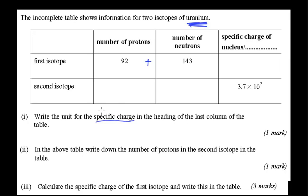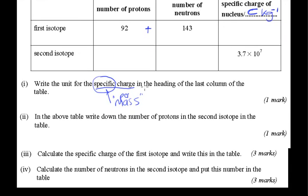Let's see what the first question is. Write the unit for the specific charge in the heading of the last column of the table. Well, specific charge, what does that word specific mean? If you ever see that, think mass. In fact, think per mass. So what this is saying is that it's the charge per mass. In other words, it's Coulombs, capital C, per kilogram. So there's the per kilogram. Specific charge. You may have also heard that in specific heat capacity and specific latent heat. Again, it's per mass.